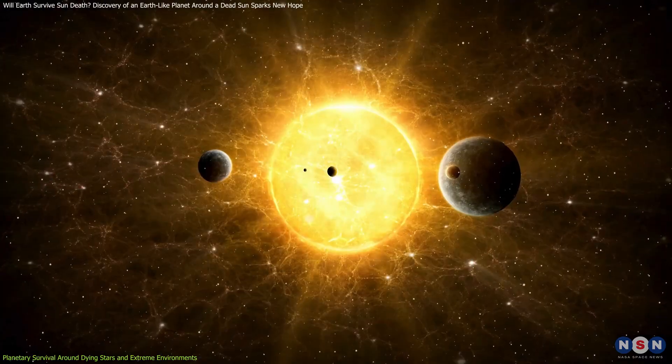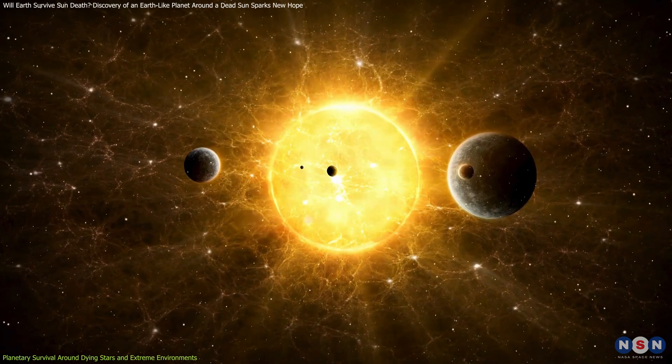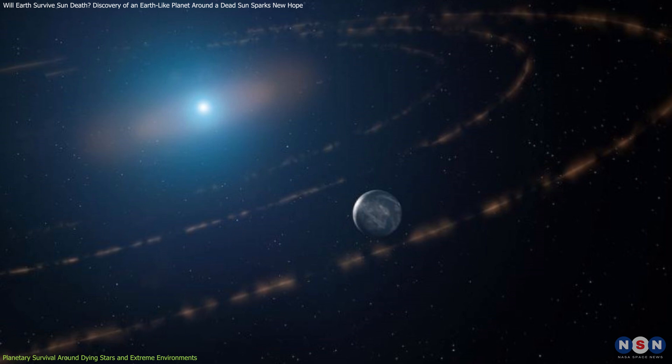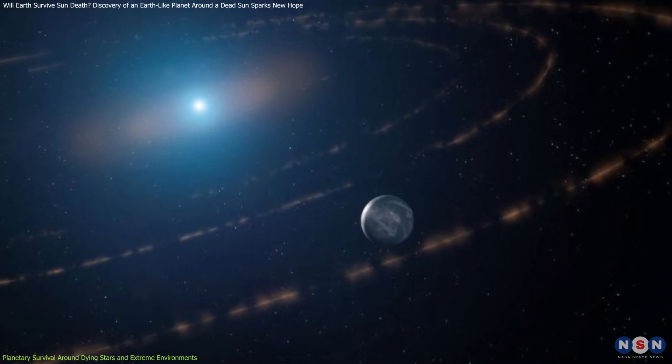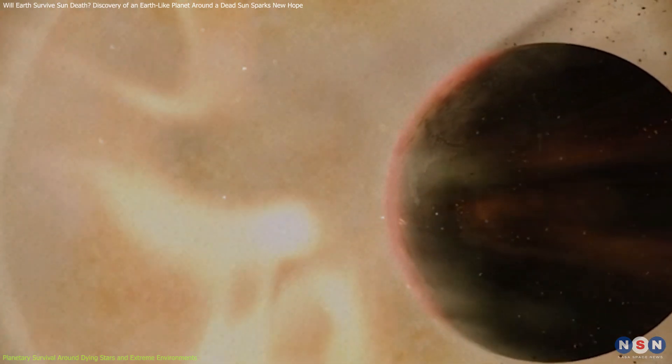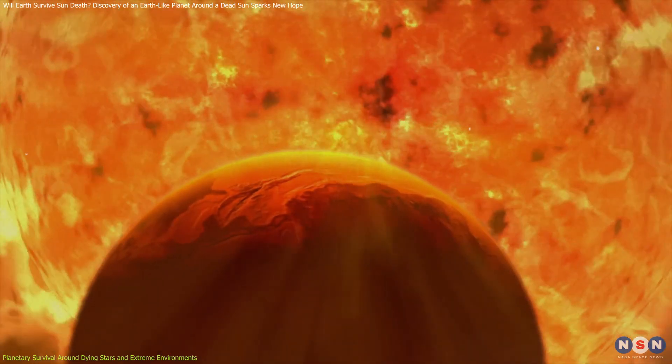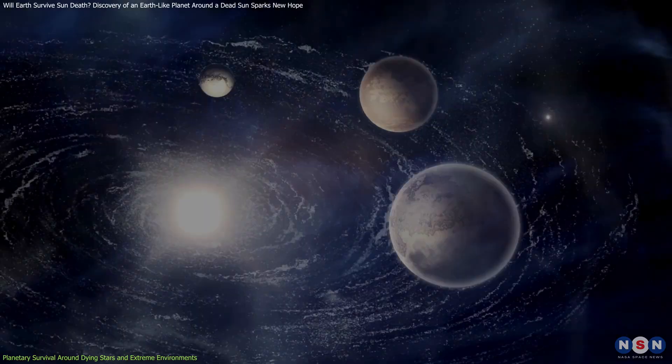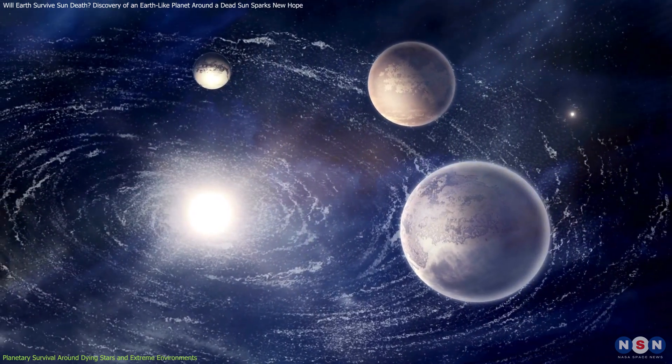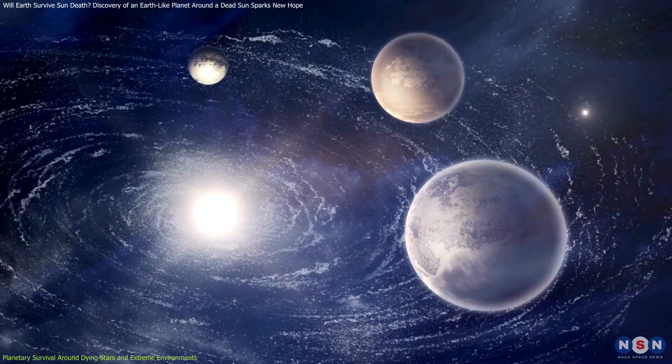The concept of a habitable zone shifts dramatically when dealing with dying stars. Around white dwarfs, the habitable zone is much closer due to their low energy output, but this proximity exposes planets to intense radiation during the stars' earlier phases. Despite these harsh conditions, recent studies suggest that planets in the habitable zone of white dwarfs could still sustain life, albeit in extreme forms.